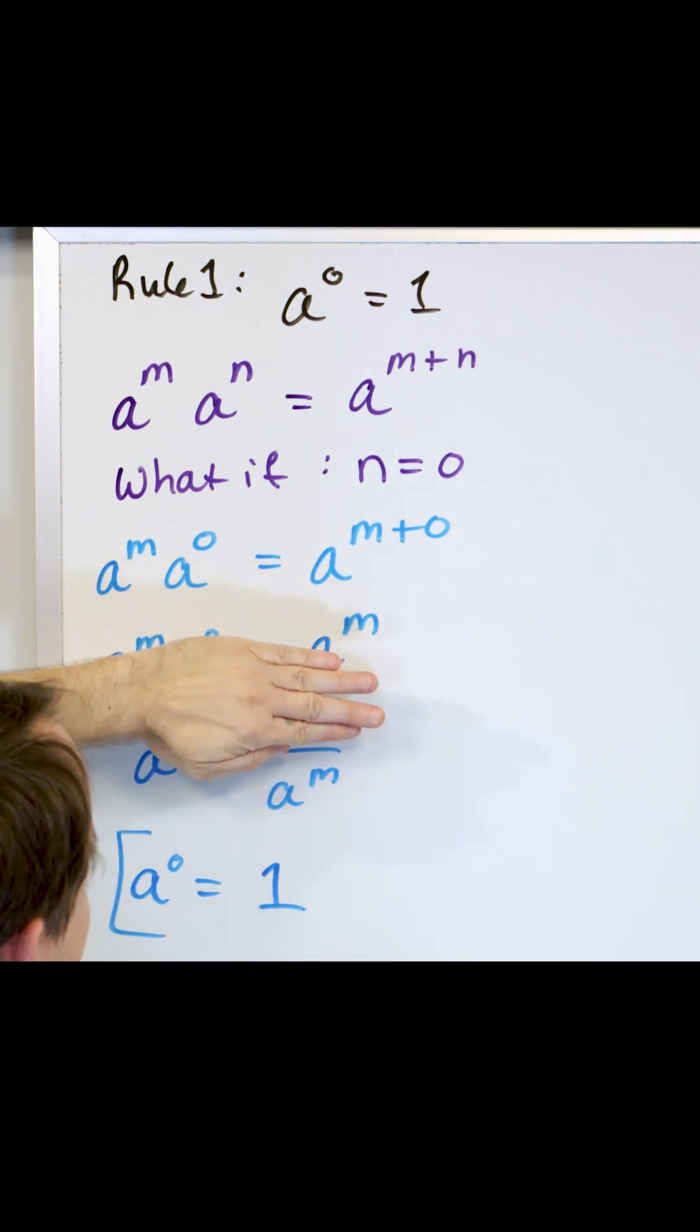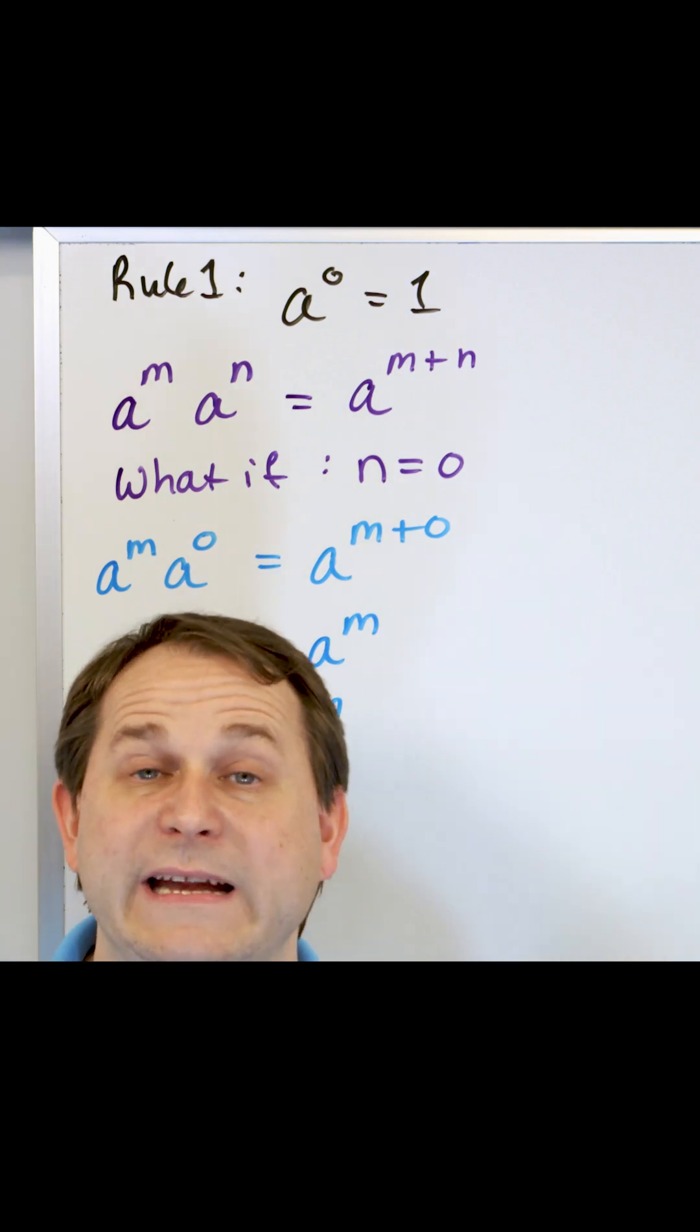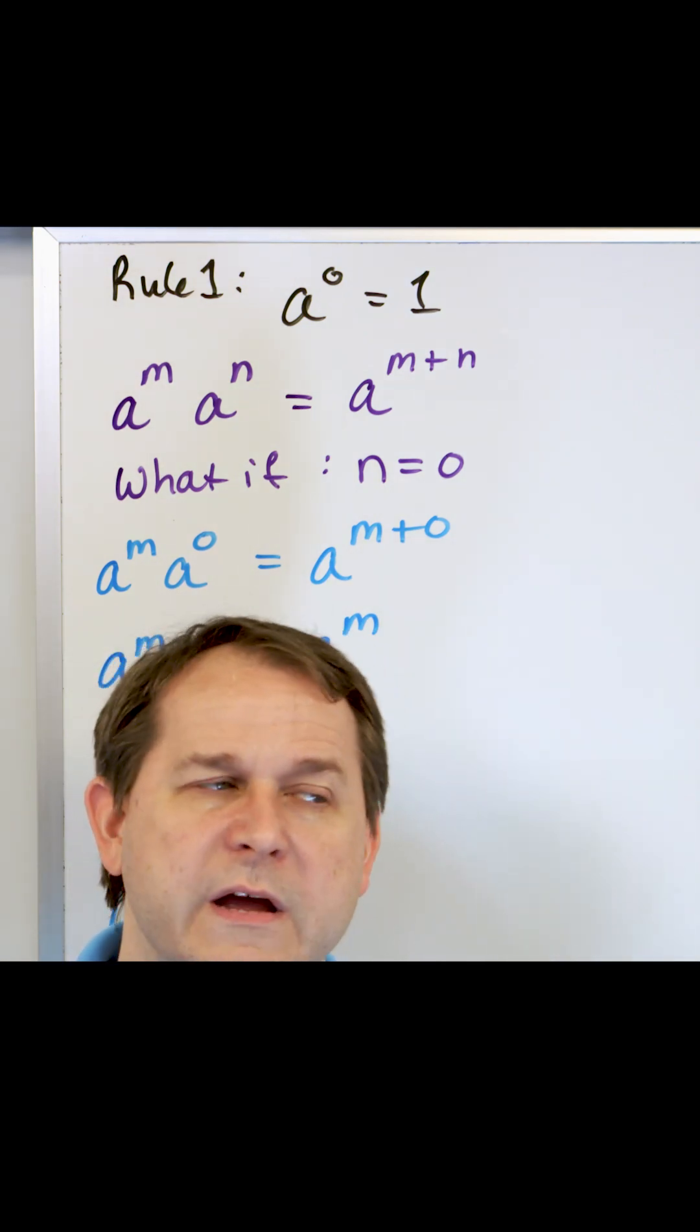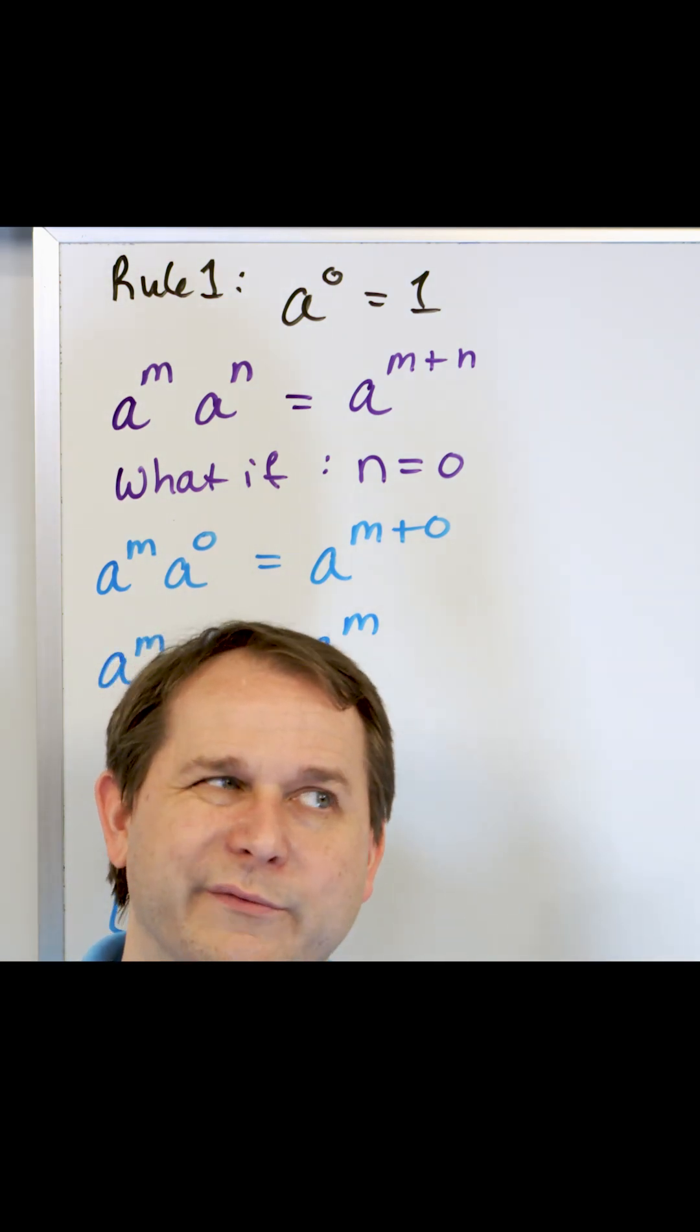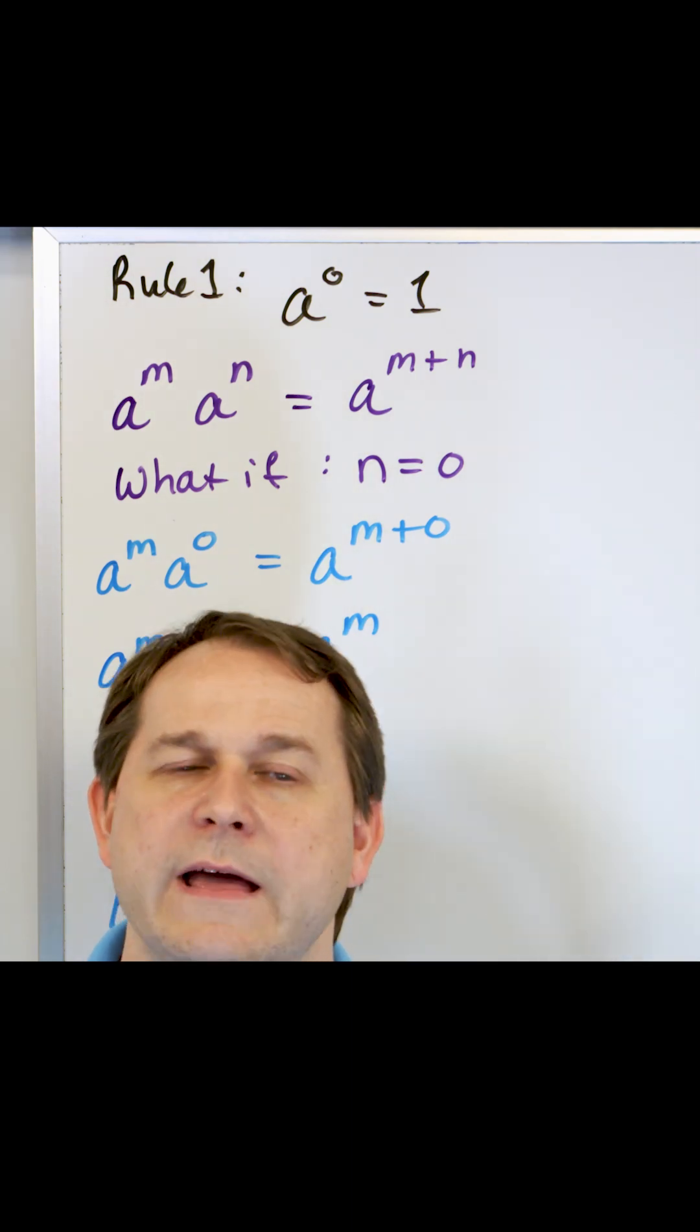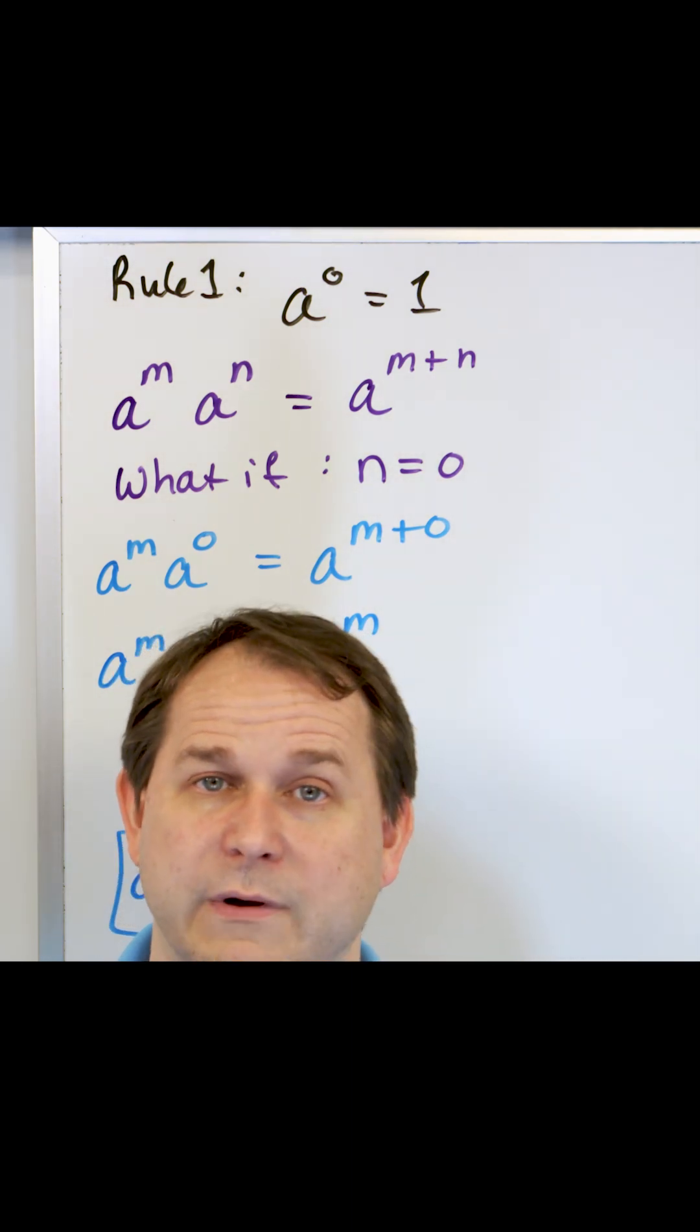But on the bottom, cover up the top, zero raised to any power is gonna give you zero. Zero squared is zero because zero times zero. It gives you zero. Zero raised to any power gives you zero.